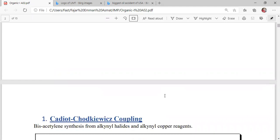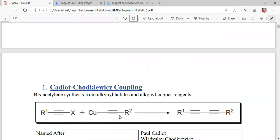In this reaction, alkynyl halide will react with alkynyl copper reagent to synthesize bis-acetylene. This reaction is a coupling reaction.